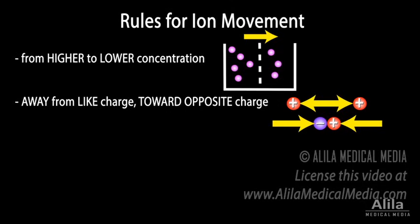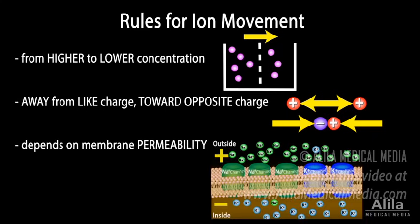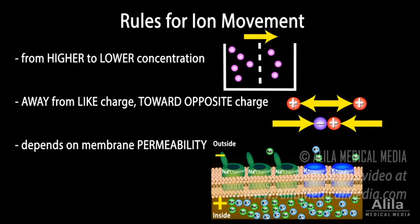In the case of the cell membrane, there is a third factor that controls ion movement: the permeability of the membrane to different ions. Permeability is achieved by opening or closing passageways for specific ions, called ion channels. Permeability can change when the cell adopts a different physiological state.